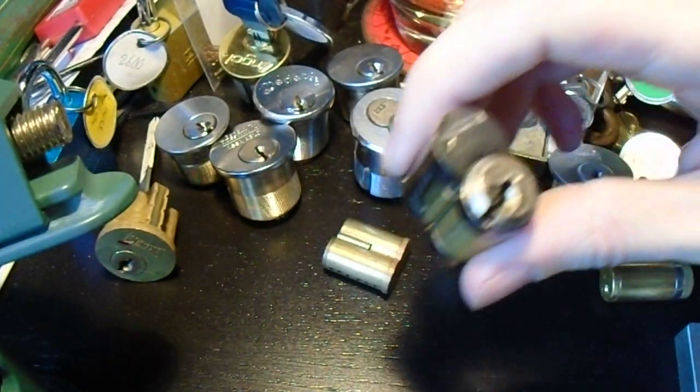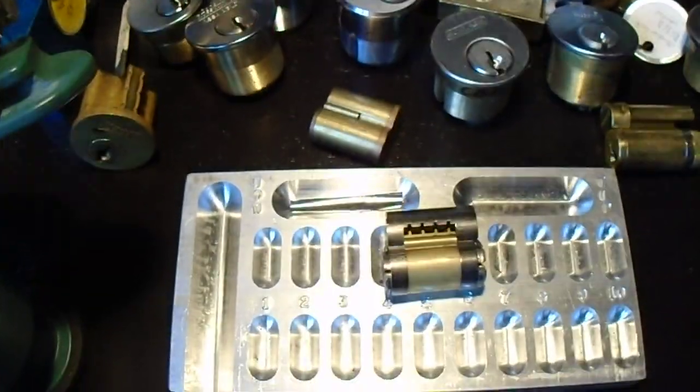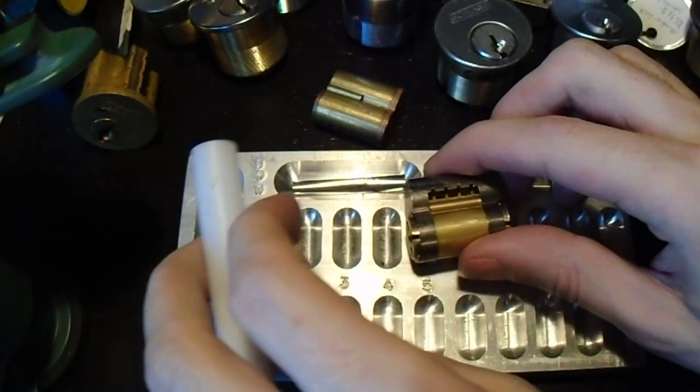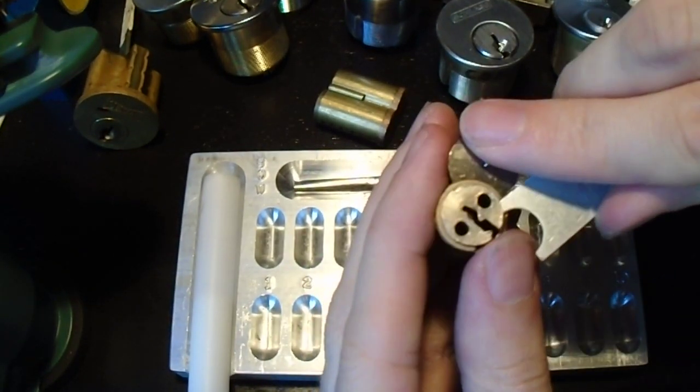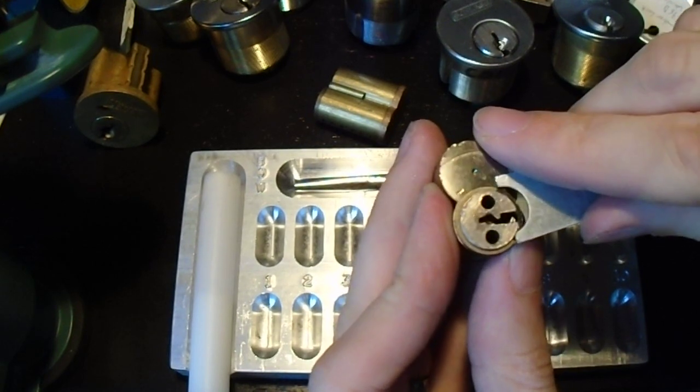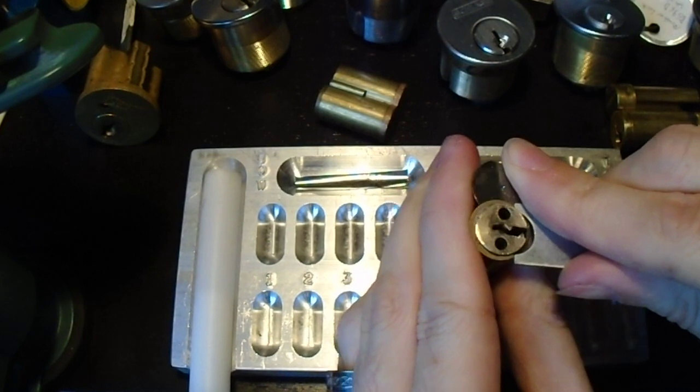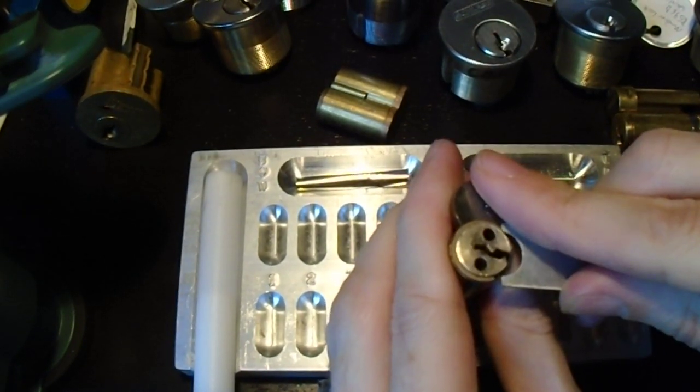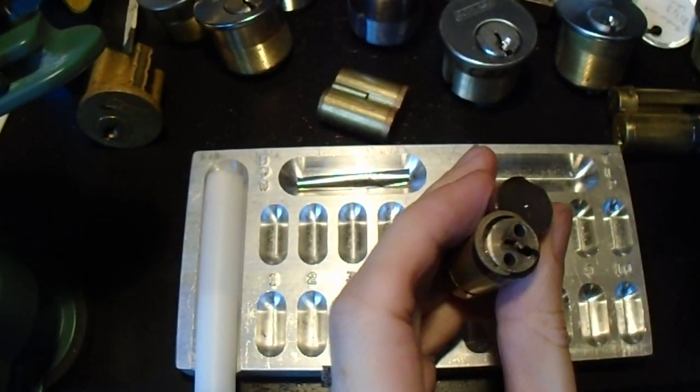So let's see if we can get in here and I can show you how all the different parts fit together and all that. Alright. Now the nice thing about large format cores is that you can use a standard plug follower on them. You don't need to use a special ejector block or just dump everything onto your workbench and hope that nothing too important goes flying off.